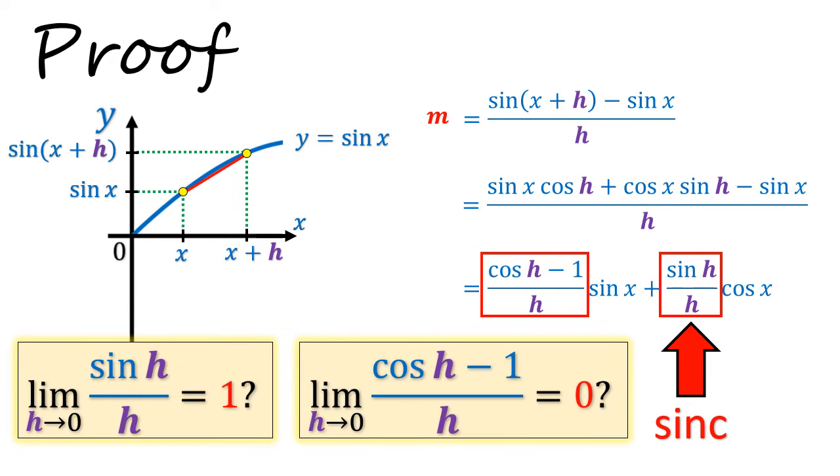Secondly, we'll also need to show that cos h minus 1 over h tends to 0 as h tends to 0 as well. And if we can do that, we would have proven that the derivative of sin x would be cos x.